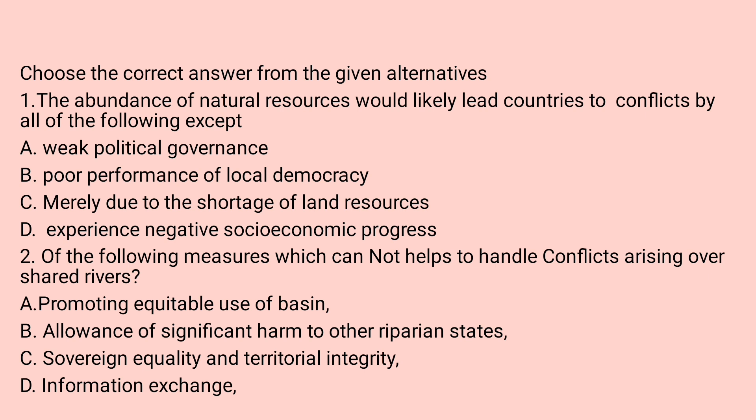Question number one: the abundance of natural resources would likely lead countries to conflict by all of the following ways except — A: weak political governance, B: poor performance of local democracy, C: merely due to the shortage of land resources, D: experience negative socio-economic progress. Natural resource conflicts may arise by all of the following except C. Weak political governance, poor performance of local democracy, and experiencing negative socio-economic progress are major causes, but shortage of land resources is not.